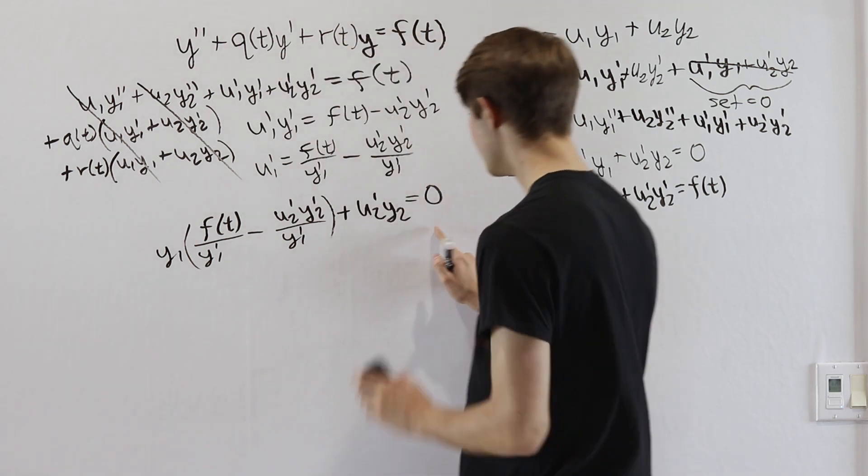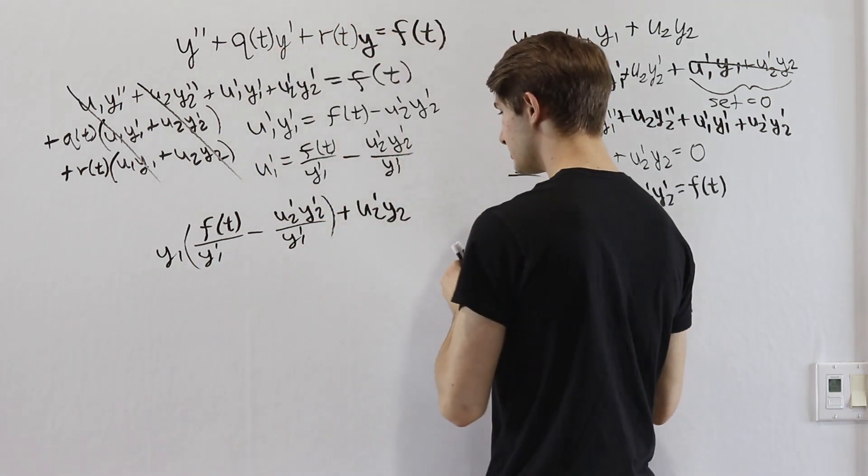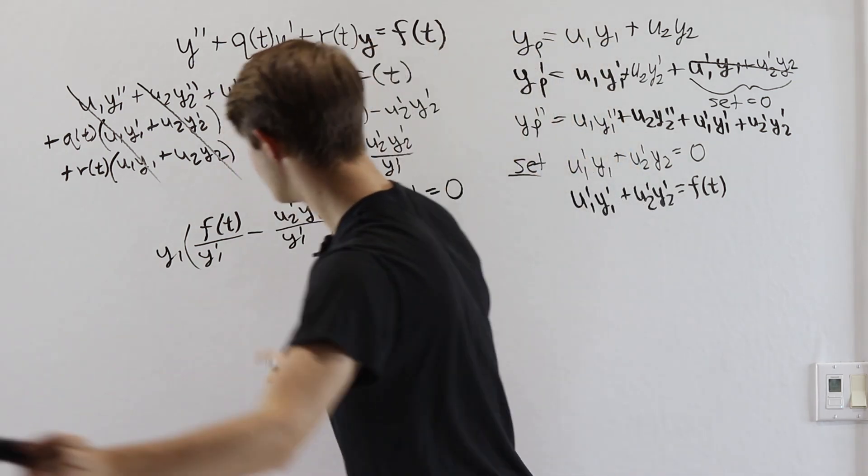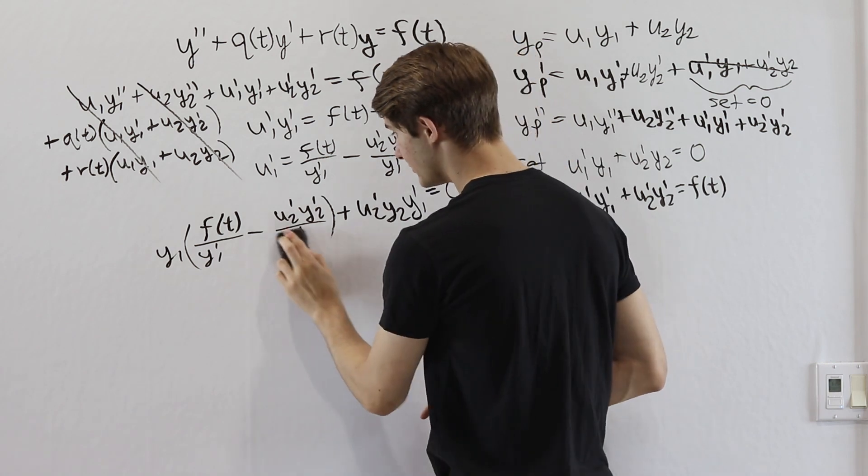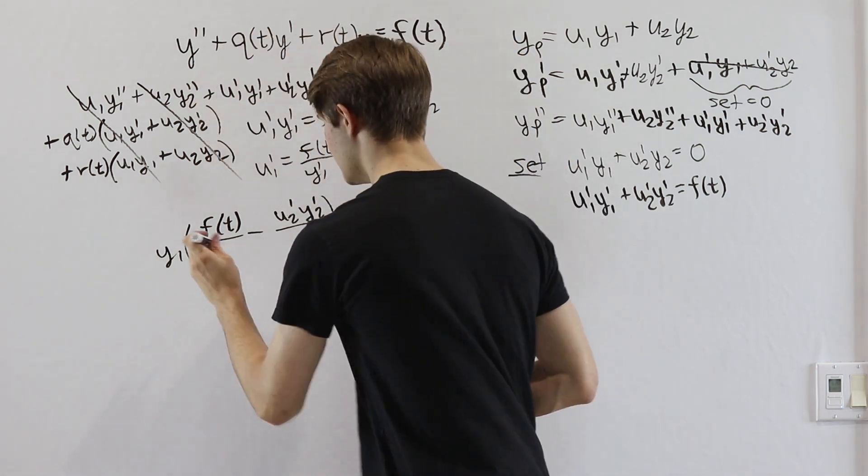To start out, I'm going to multiply everything in this equation through by y1 prime. So that means that on this right side here, the 0 is going to stay, but we're going to multiply y1 prime right here, set that equal to 0, and then these y1 prime in the bottom are going to cancel out. So these denominators are just going to be a 1.